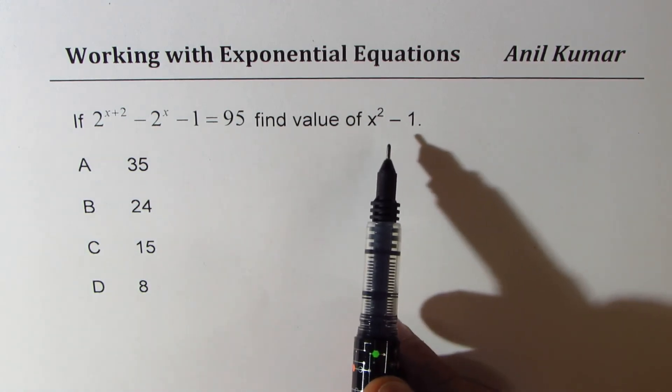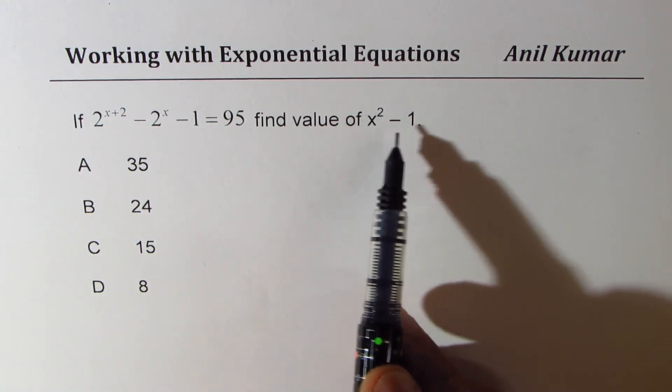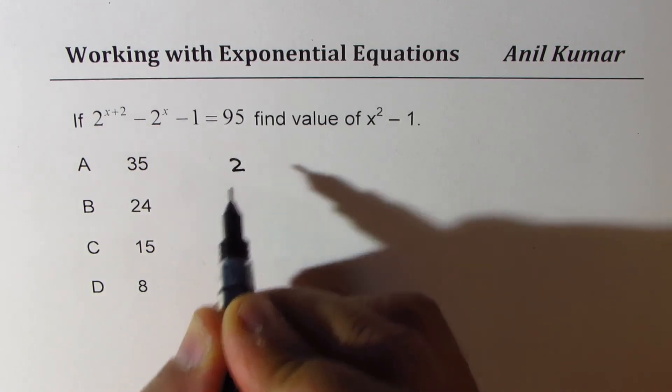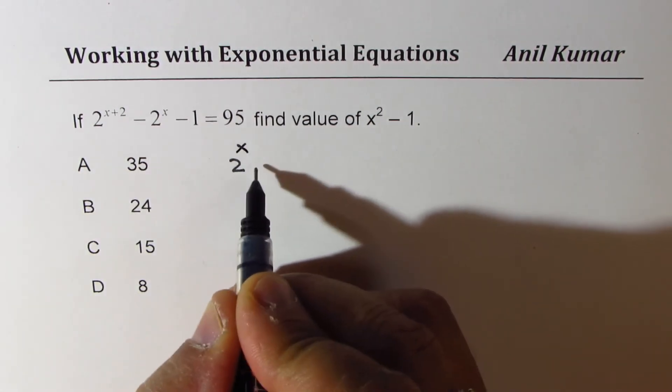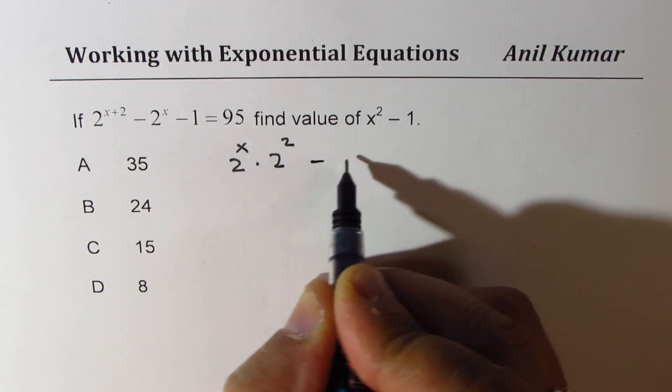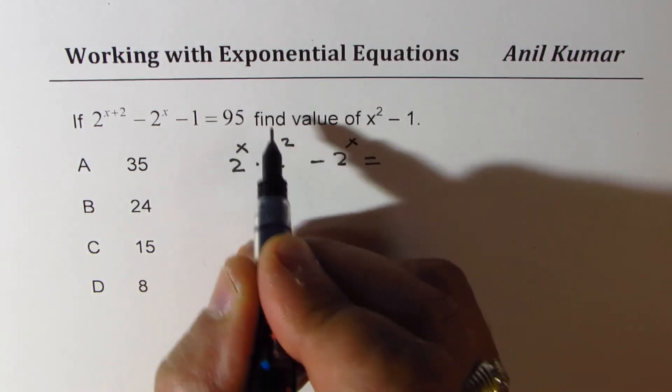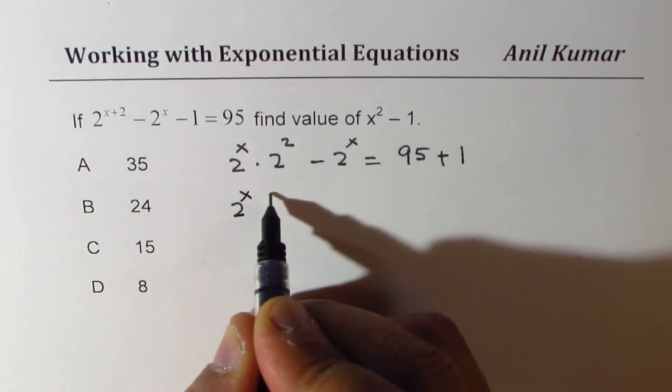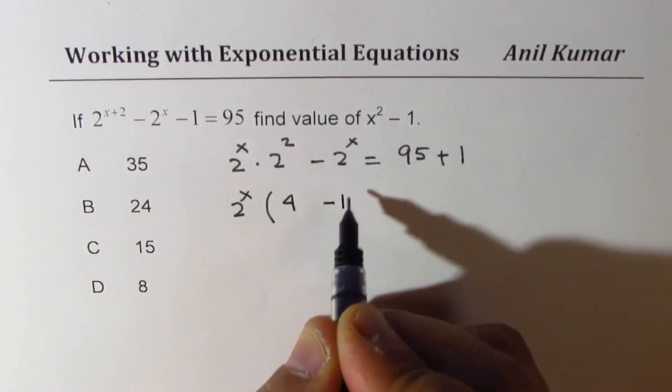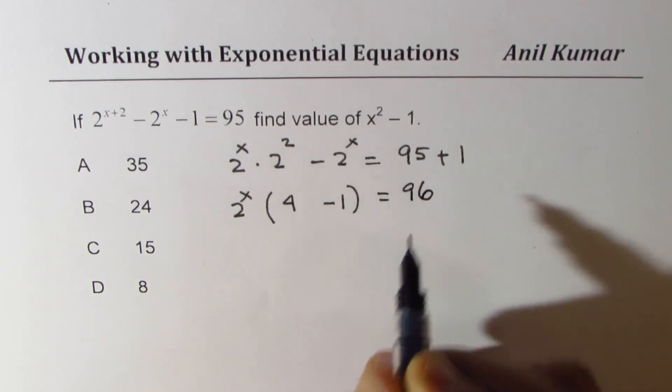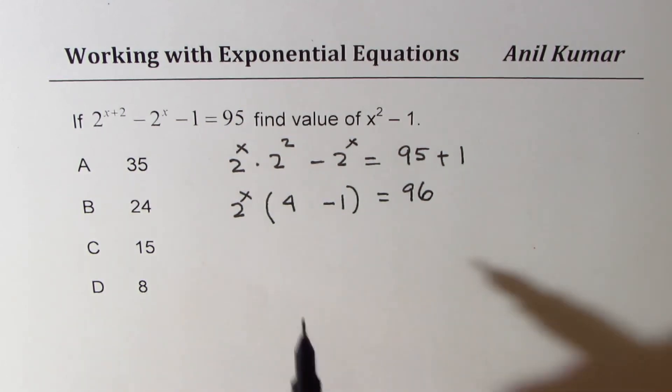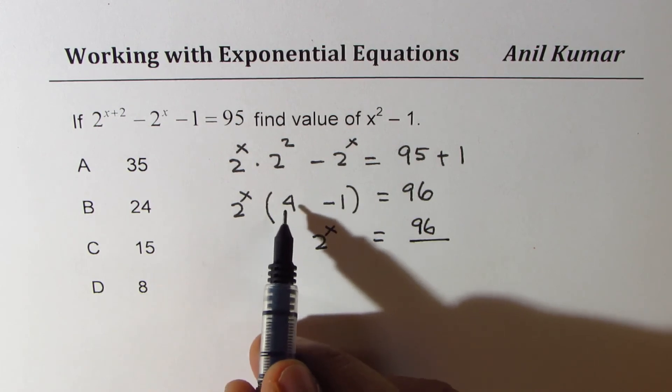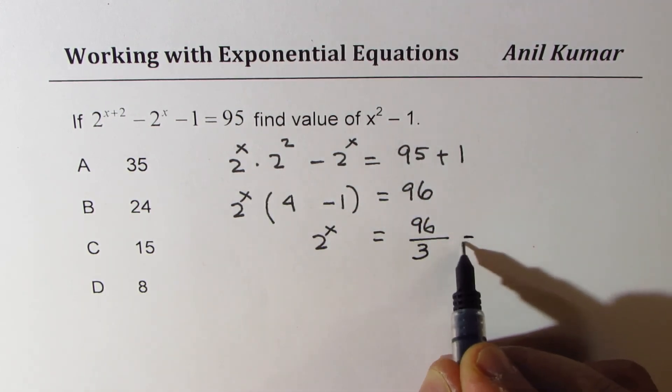I have 2 to the power of x plus 2 really means 2 to the power of x times 2 squared. Minus 2 to the power of x. Take one to the other side, we get 95 plus 1. Now, 2 to the power of x is common. We get here 2 square, which is 4 minus 1 equals to 96. So we get 2 to the power of x equals to 96 divided by 4 minus 1 is 3, which is 32.